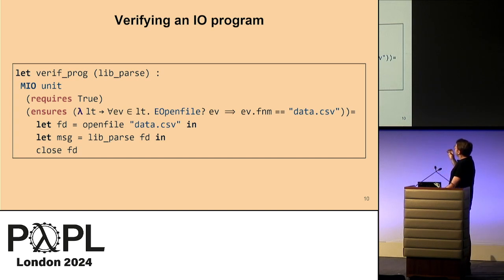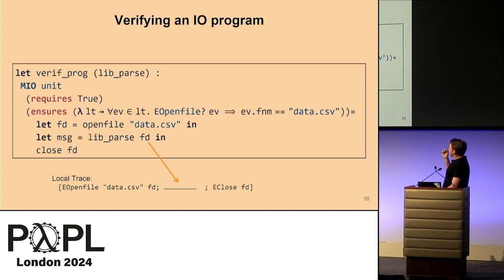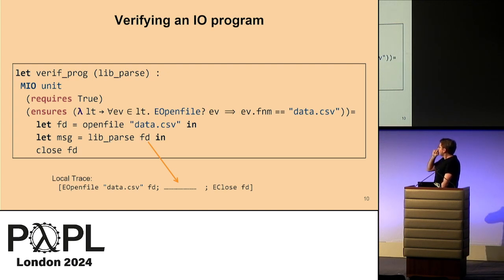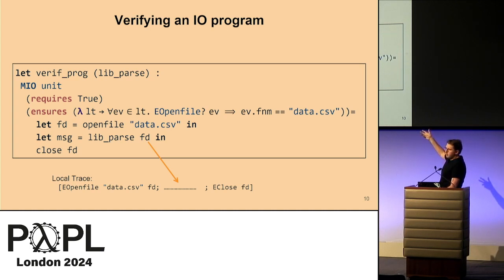MIO allows us to write pre- and postconditions over traces. For each I/O operation, there is an associated event — for example, EOpenFile for open, EClose for close — and these events carry the arguments and result values of the operations. We have this for libparse as well. It becomes clear that we must make assumptions about libparse to verify the postcondition against the local trace. The postcondition is verified against the local trace, and since it also characterizes the behavior of libparse, it is a global safety property for the entire application when verifprog has initial control.